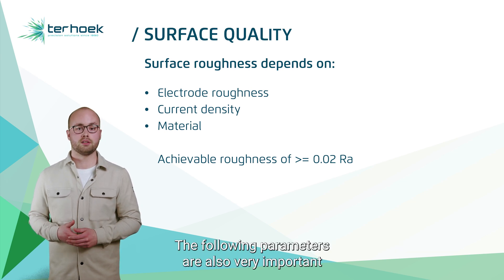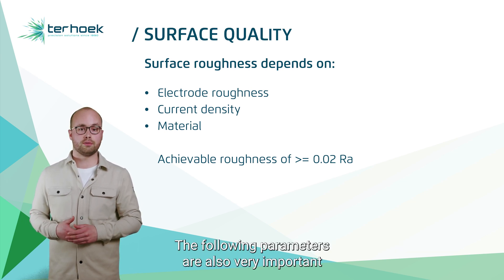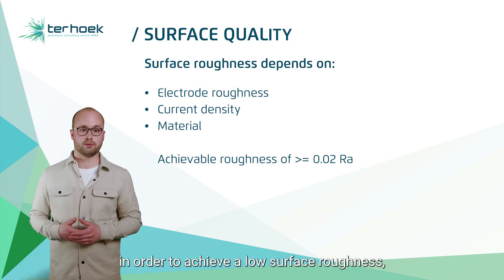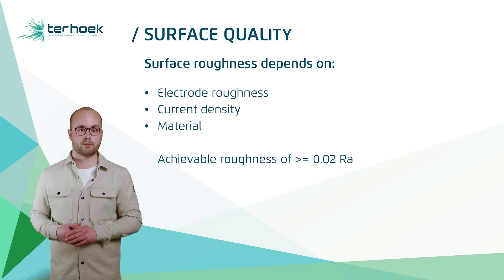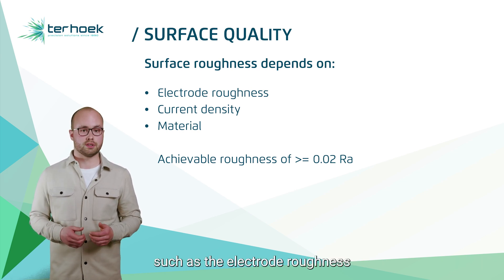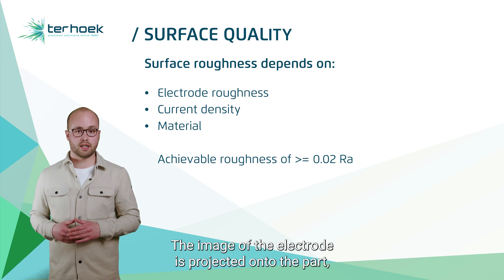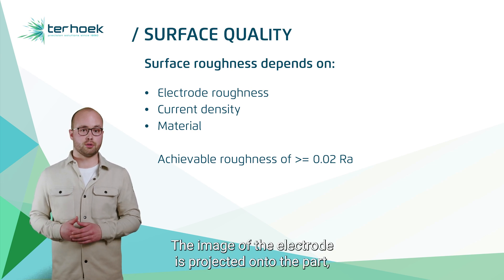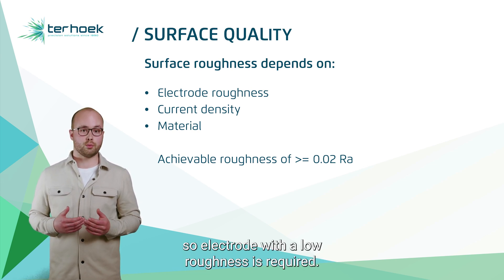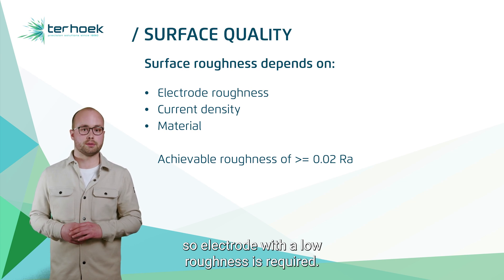The following parameters are also very important in order to achieve a low surface roughness. Such as the electrode roughness. The image of the electrode is projected onto the part, so an electrode with a low roughness is required.